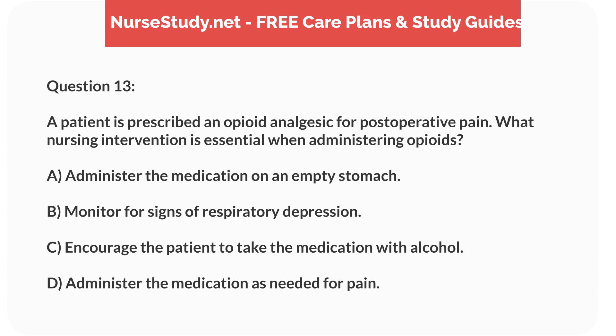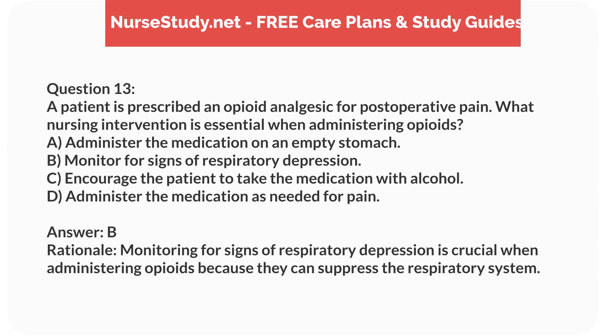Question 13. A patient is prescribed an opioid analgesic for postoperative pain. What nursing intervention is essential when administering opioids? A. Administer the medication on an empty stomach. B. Monitor for signs of respiratory depression. C. Encourage the patient to take the medication with alcohol. D. Administer the medication as needed for pain. Answer: B. Rationale: Monitoring for signs of respiratory depression is crucial when administering opioids because they can suppress the respiratory system.